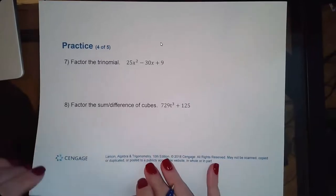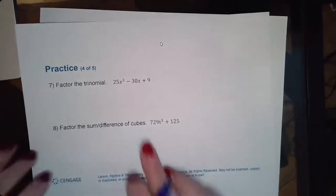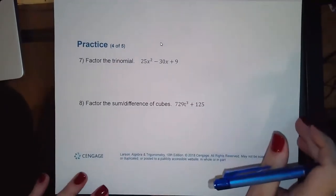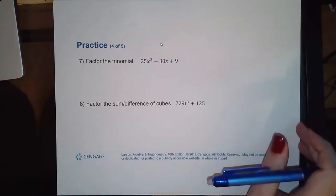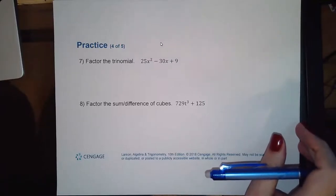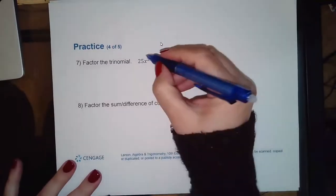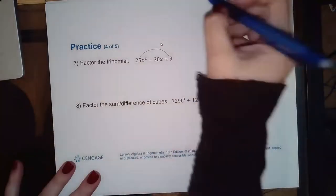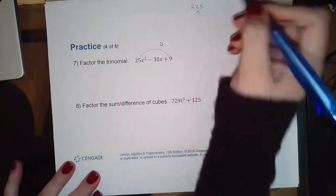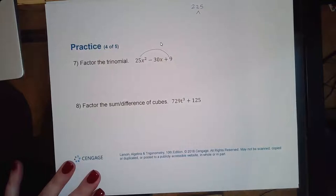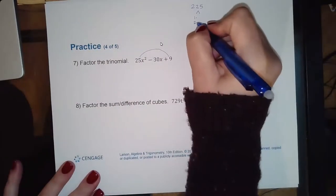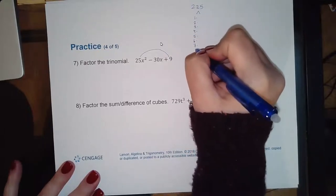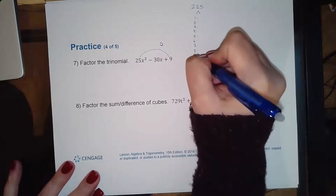We've got another one — a pretty big one. This was one of those special trinomials, but you don't need to memorize extra rules. If it's a trinomial, just use the same method. So 25 times 9 gives me 225. The square root of 225 is 15, so I'm going to go down the factor list all the way to 15 to get all possibilities.